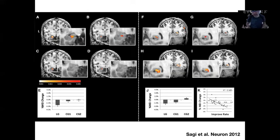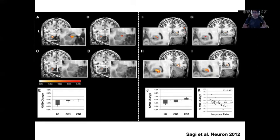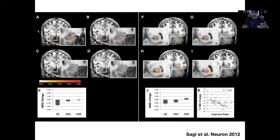You might ask yourself: what is that change exactly, and what does it correspond to biologically? This is the right question for people doing cognitive neuroscience. We study humans with magnetic resonance imaging; however, MRI is not the true biology of the brain — it's an indirect measure. There is still a huge gap between MRI findings and true biological changes in the brain.